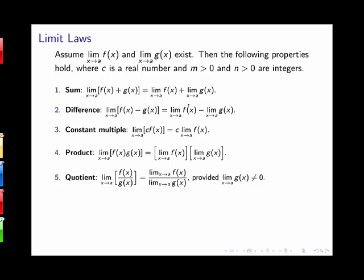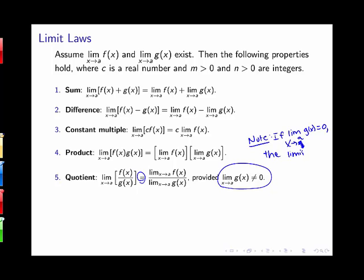Next, we get the quotient limit law, which tells us that the limit as x goes to a of f over g equals the quotient of those limits — the limit of f divided by the limit of g — as long as the limit of g is not zero, because we can't divide by zero. One important note: this rule tells us the equality holds when that limit is not zero, but it doesn't tell us what happens if that limit is zero. The limit of such a quotient may or may not exist in that case. All this rule says is that to apply it, we need the denominator limit to be nonzero.